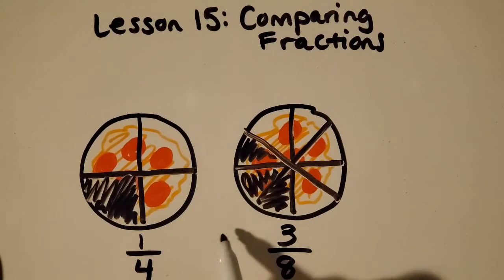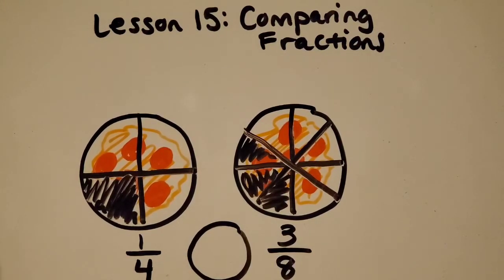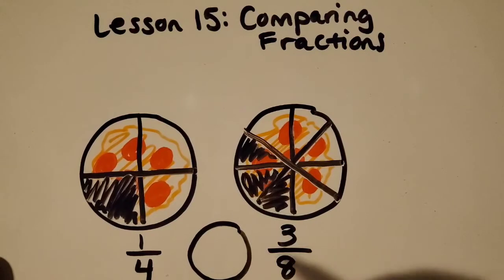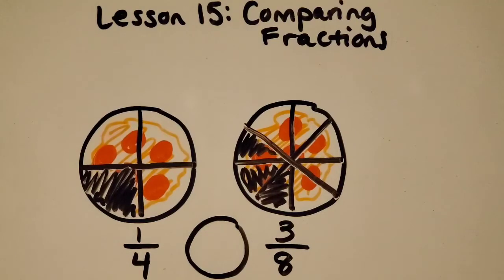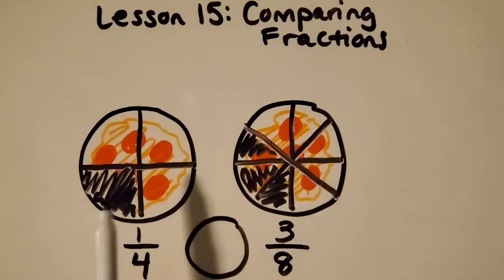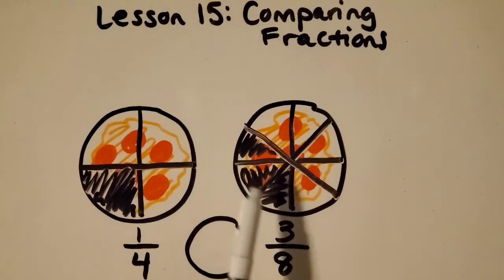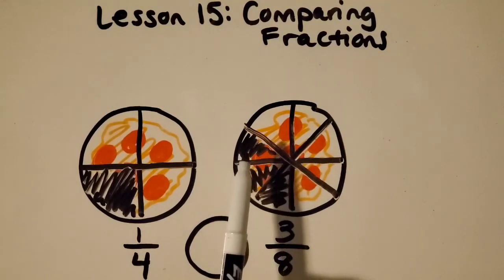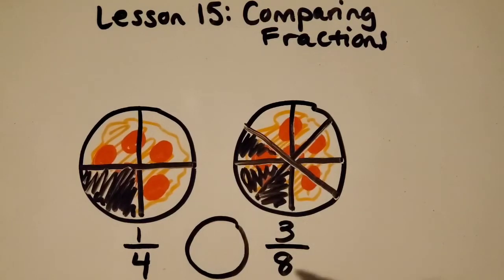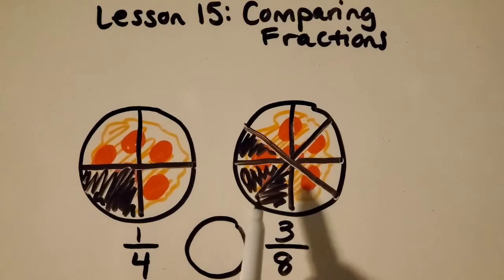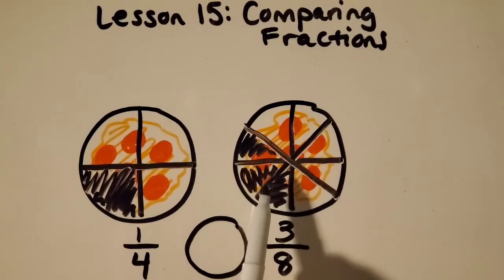I want you to think about comparing these two pizzas, and we're going to try using a comparison symbol. So it's either going to be greater than, equal to, or less than. Now our last video was on equivalent fractions, and that can really come in handy when you're comparing two different fractions, especially like these two. We can see that one-fourth is equal to, or equivalent to, two of these pieces, so two-eighths. So that means that three-eighths must be greater. And so if you need to look back at the equivalent fractions video, that would be great if you need a little bit more on that.